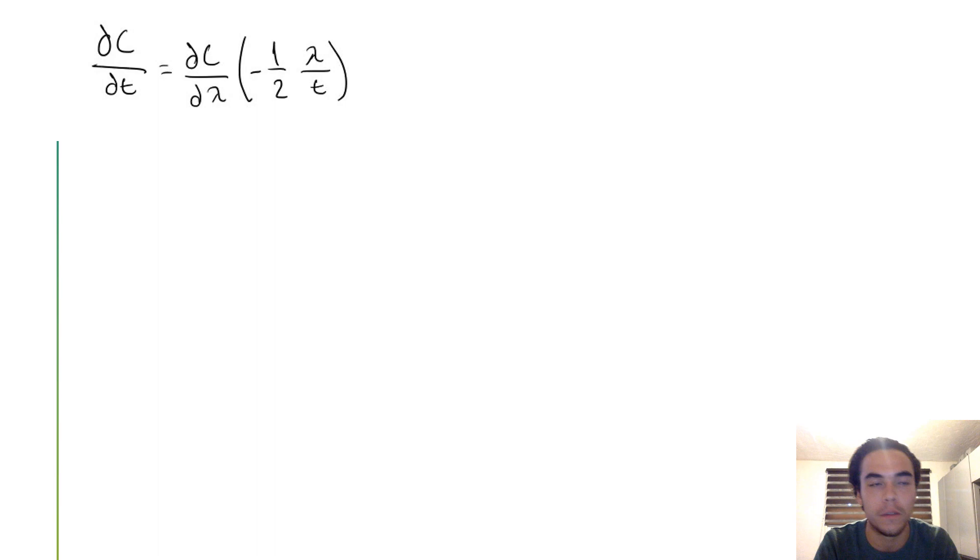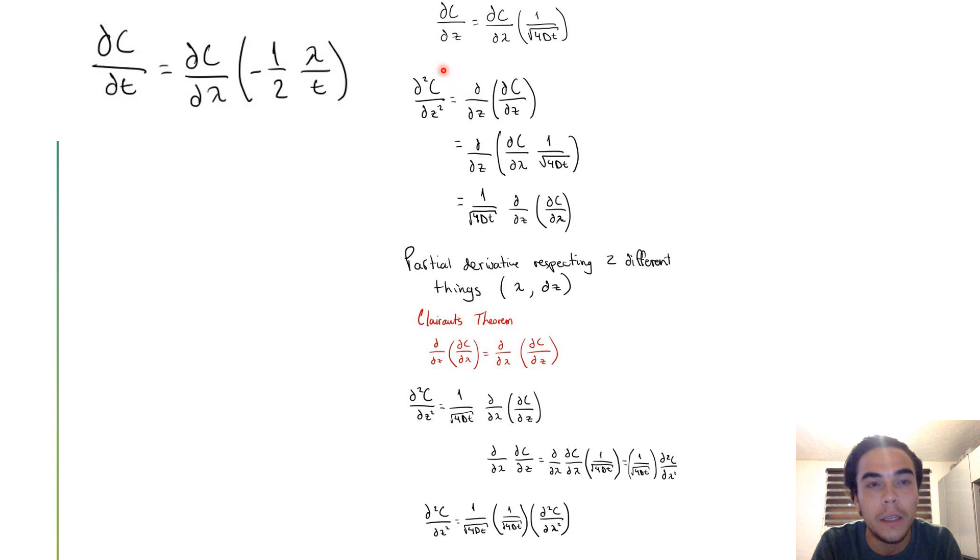After we substitute lambda into our equation, we obtain this from that side. From the other side, we obtain that d²c/dz² equals d/dc multiplied by dc/dz. And once we substitute our following equation, we end up with this.